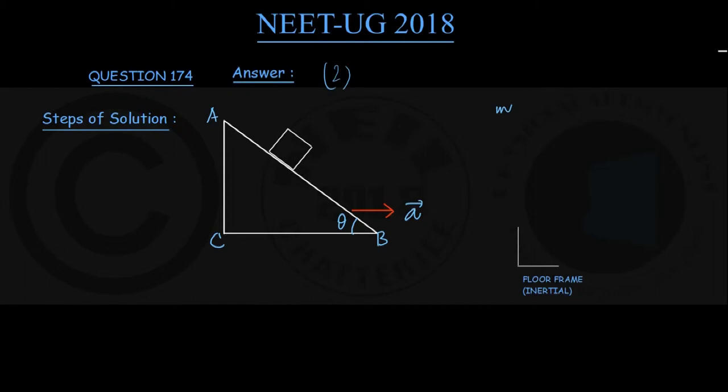You can only identify the real forces acting on the block. One is the force of gravity acting vertically downwards, and the other is the normal force given by this inclined face onto the block perpendicular to the face AB. Since the mass is M, the force of gravity is Mg and the normal force given by the face AB onto the block would be called N. These are the real forces which you can identify in an inertial frame such as the floor frame.